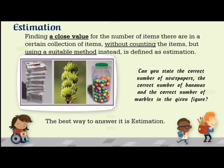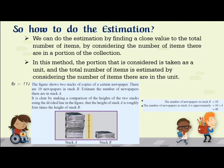Can you state the correct number of newspapers, the correct number of bananas, and the correct number of marbles in the given figure? The best way to answer it is estimation. We can do estimation by finding a close value to the total number of items by considering the number of items in a portion of the collection. In this method, the portion considered is taken as a unit, and the total number of items is estimated by considering the number of items in that unit.